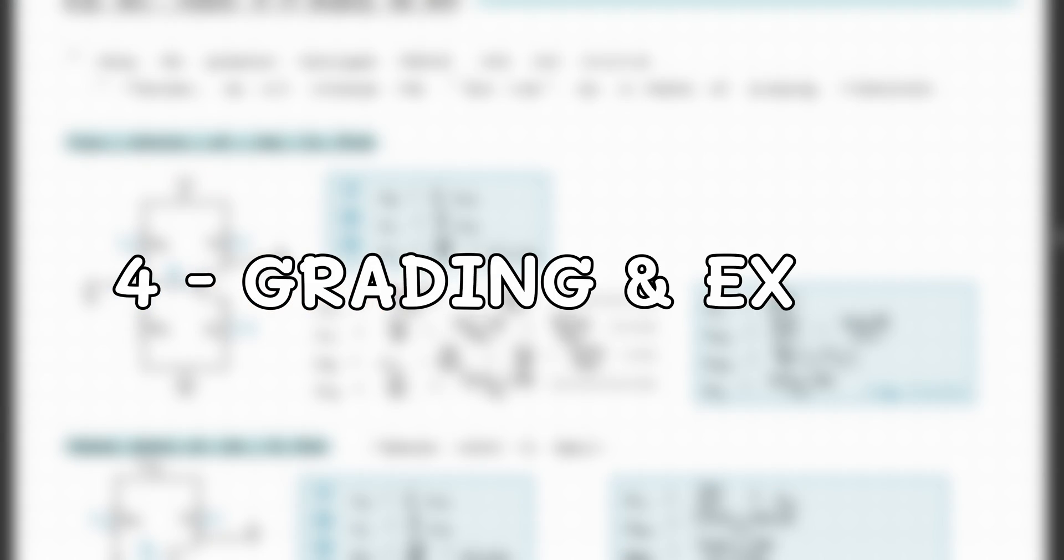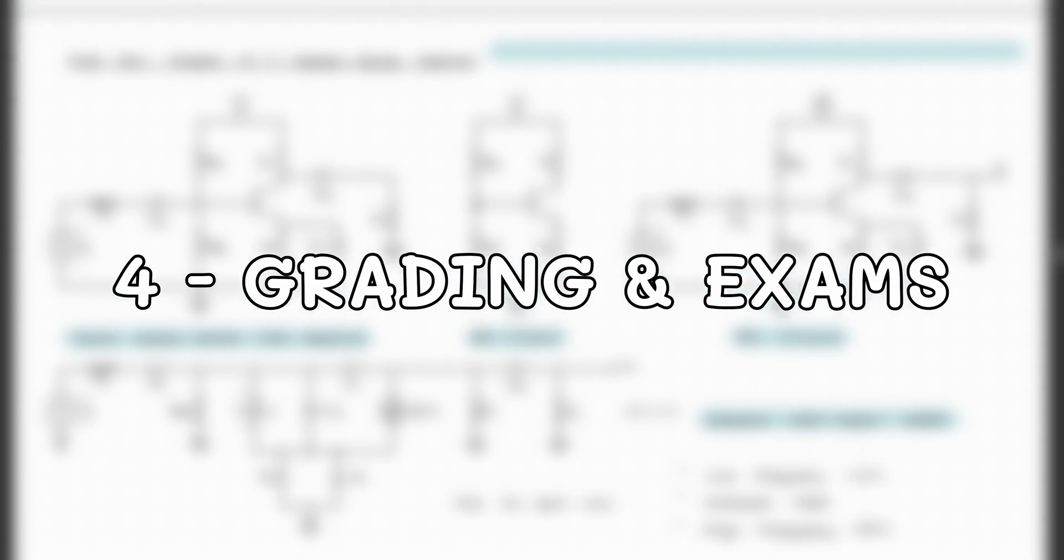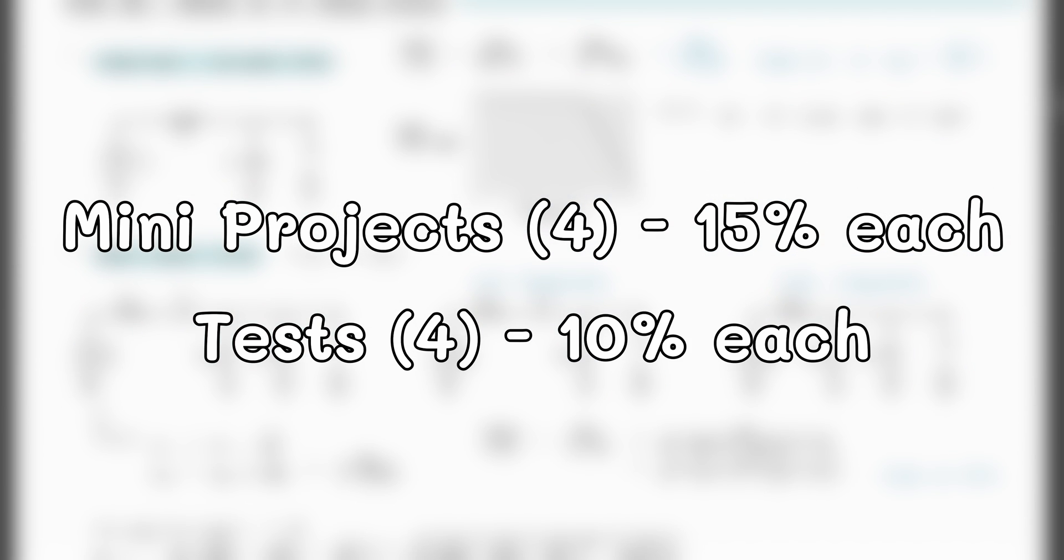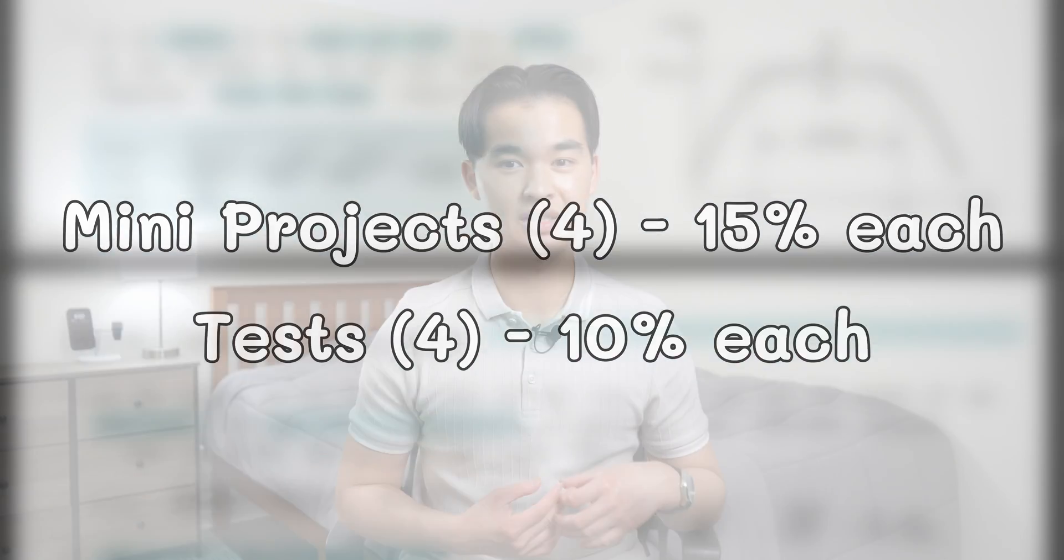In terms of the grading scheme and the exams for ELEC 301, here's a breakdown of everything that you'll be graded on and the weights associated with each item. It's pretty simple honestly, your four mini projects will be worth 15% each totaling up to 60% and your four tests will be worth 10% each totaling up to 40%, and you must have a passing average on both the mini projects and the tests in order to pass the course.